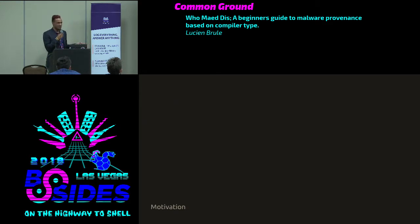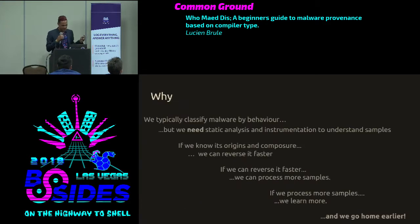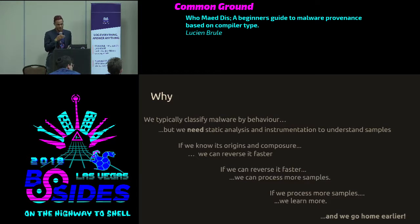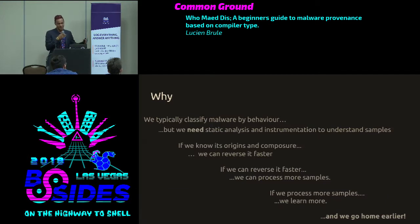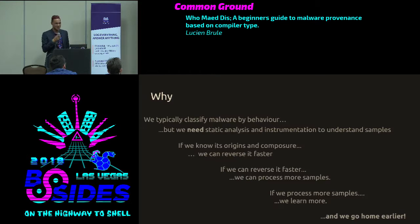Motivation: why are we going to learn about malware provenance? We typically classify malware by behavior, but we need static analysis and instrumentation to understand samples. If we know a malware's composure and its origins, we can reverse it faster. If we can reverse it faster, we can process more samples. If we can process more samples, we learn more, we get better, and then we go home earlier.